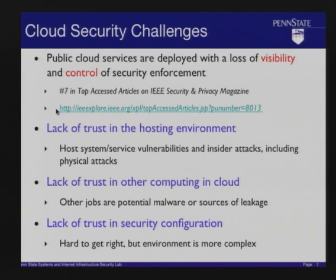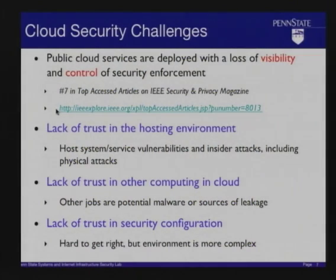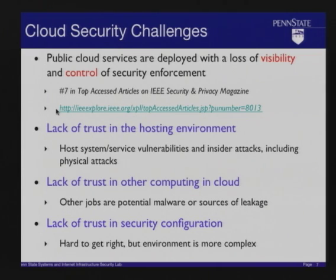A second problem is we don't trust other computation on the cloud. You might be running your job on the same node as a competitor's job — you're Pepsi running on the same cloud node as a Coke job. We also don't trust ourselves to protect ourselves from this processing. There's concern about covert channels, but that's an issue with resource management that could be made more visible. Even though it's a secrecy problem, we could provide high-integrity control over what's going on to defend against covert channels without adding a lot of complexity.